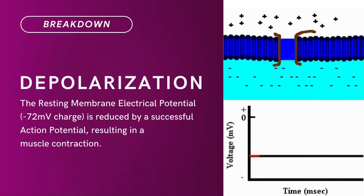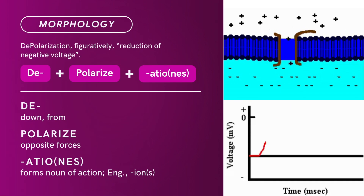Compound Term: Depolarization. Brief definition — the resting membrane electrical potential at negative 72 millivolt charge is reduced by a successful action potential, resulting in a muscle contraction. Term Morphology: Depolarization figuratively means reduction of negative voltage.